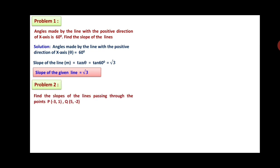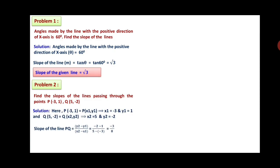Problem 2: Find the slope of the line passing through P(−3, 1) and Q(5, −2). Here x1 = −3, y1 = 1, x2 = 5, y2 = −2. Using the formula, slope of line PQ = (y2 − y1)/(x2 − x1) = (−2 − 1)/(5 − (−3)) = −3/8. Therefore the slope of line PQ is −3/8.